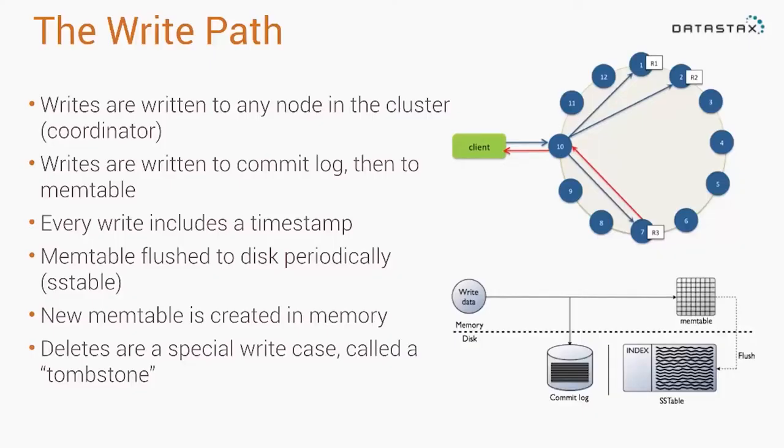Let's talk about how Cassandra reads and writes work. We're going to start with the write path, starting at a high level — the cluster level — and then zoom in to what's going on on an individual node.